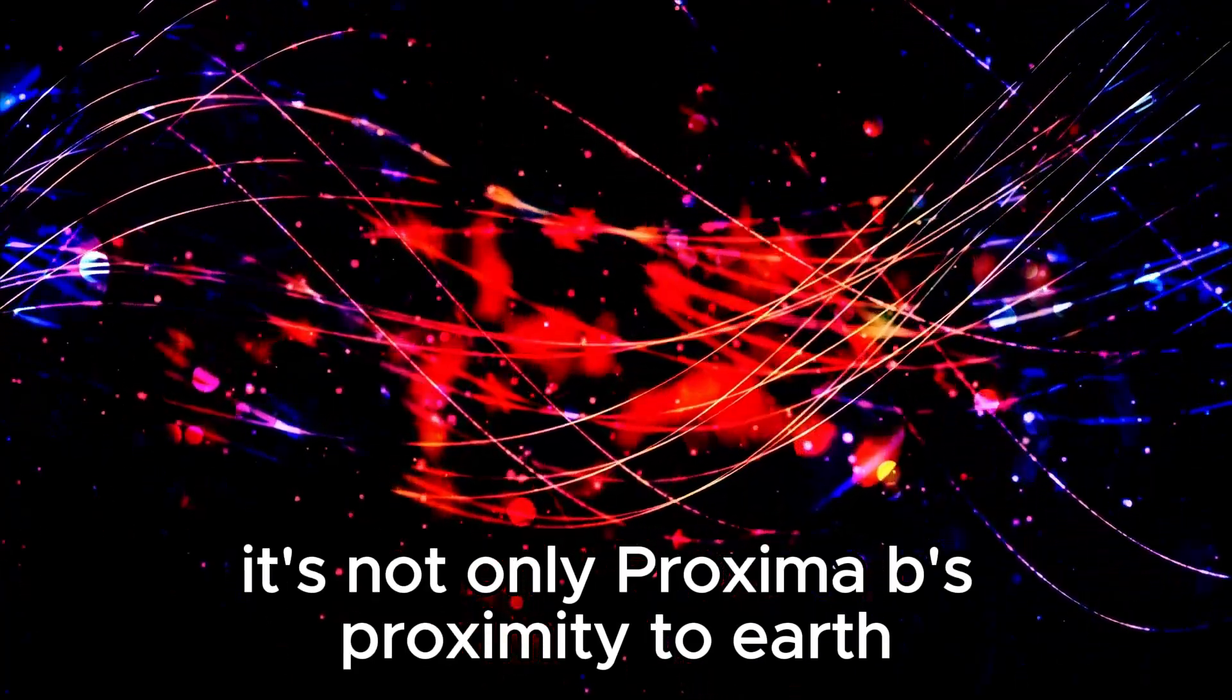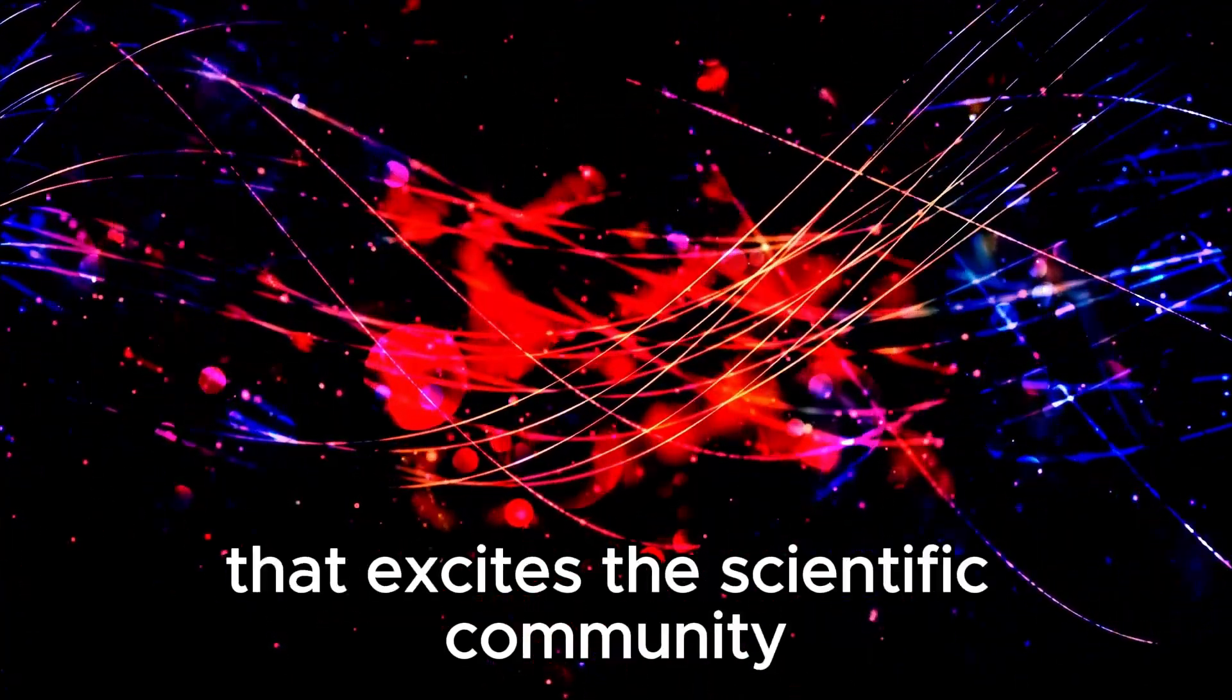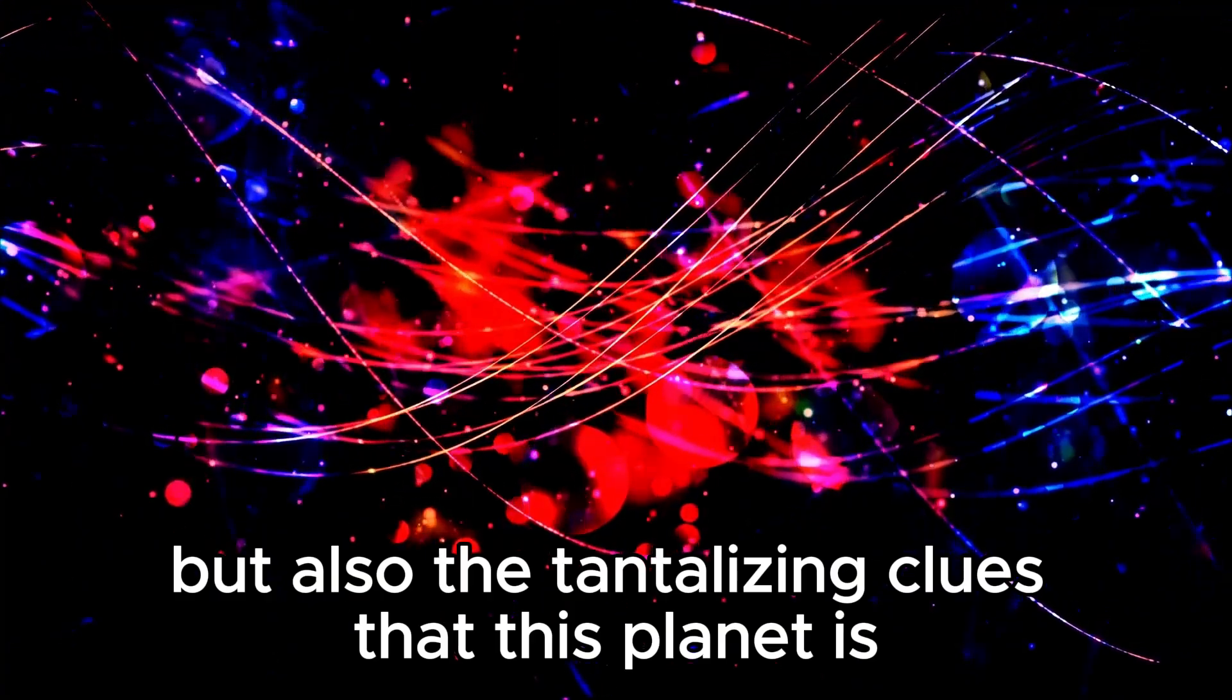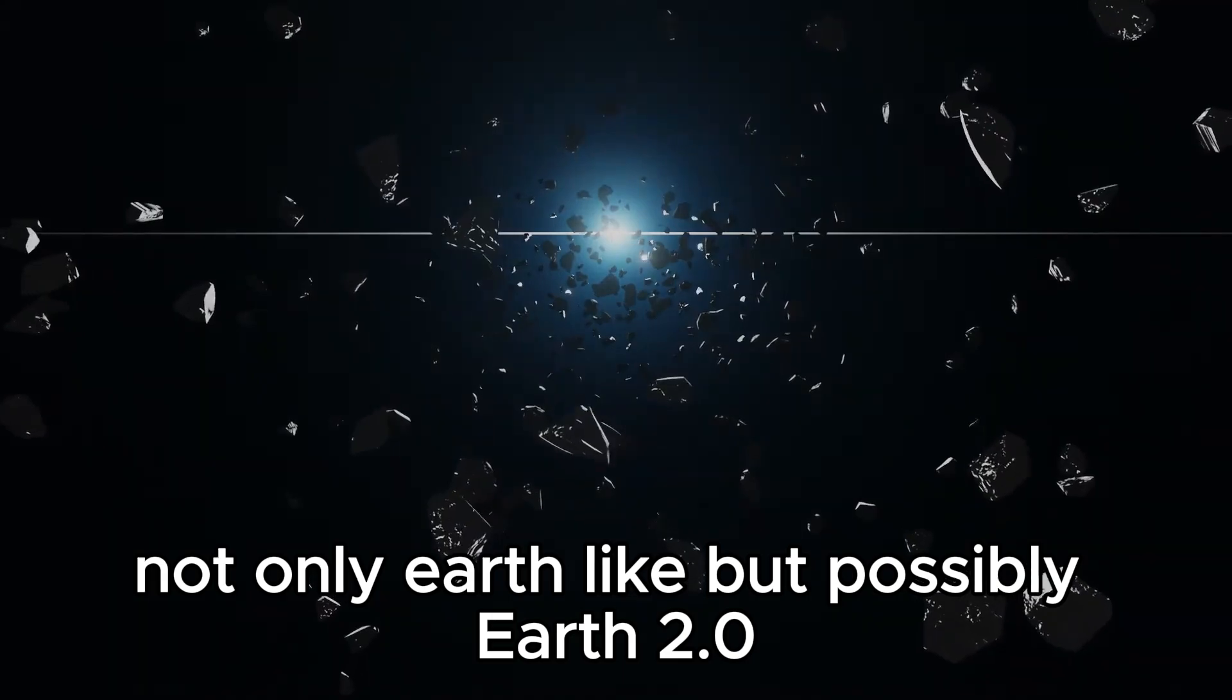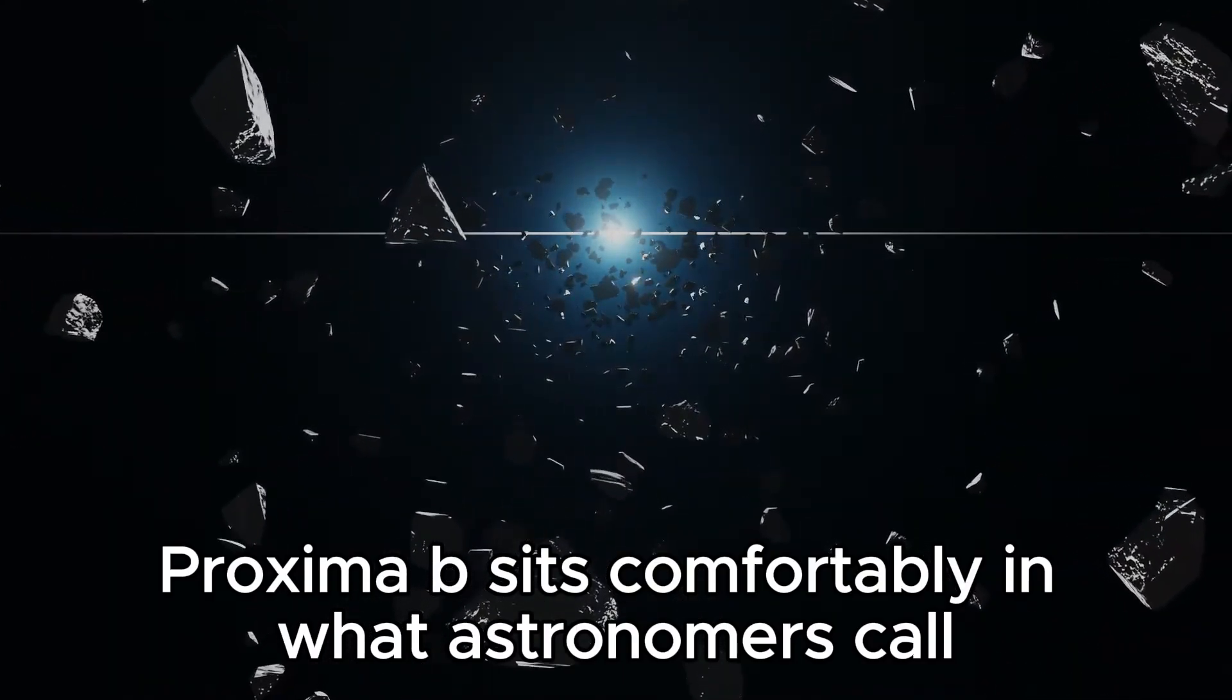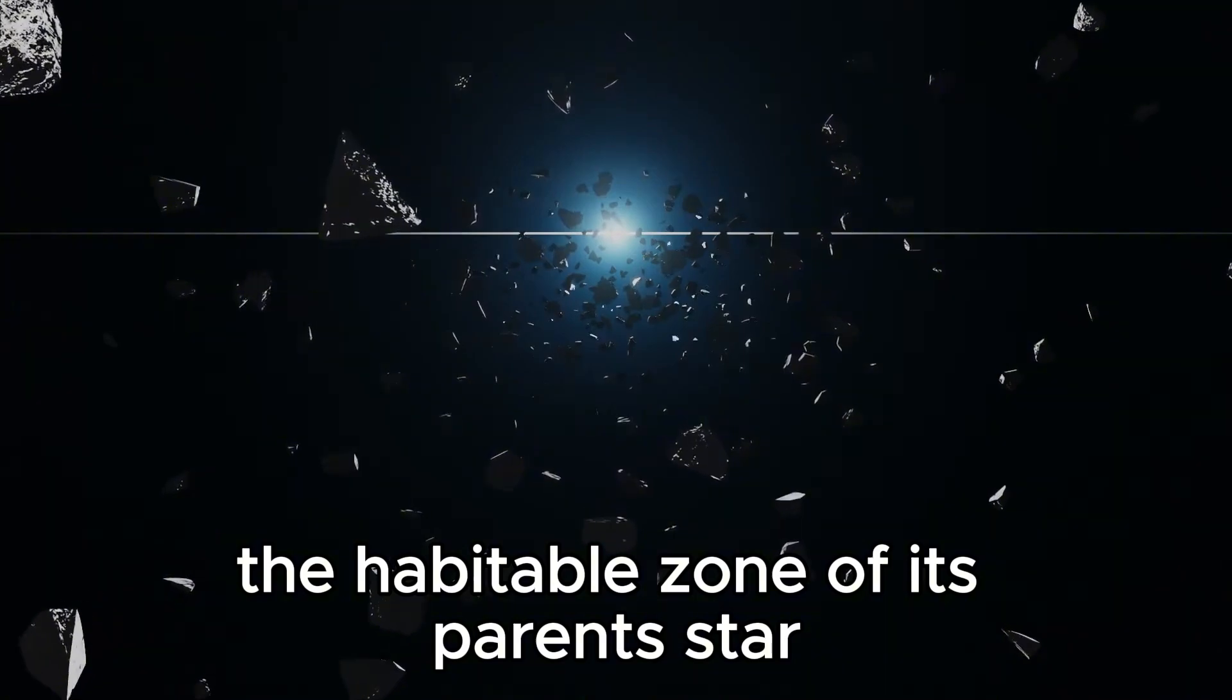It's not only Proxima b's proximity to Earth that excites the scientific community, but also the tantalizing clues that this planet is not only Earth-like but possibly Earth 2.0. Proxima b sits comfortably in what astronomers call the habitable zone of its parent star,